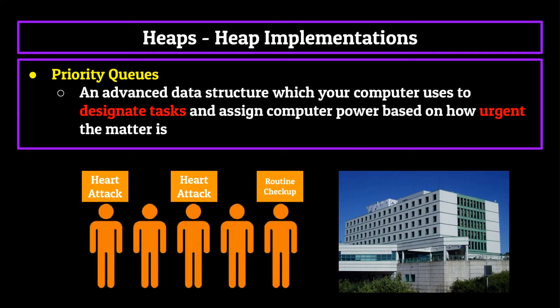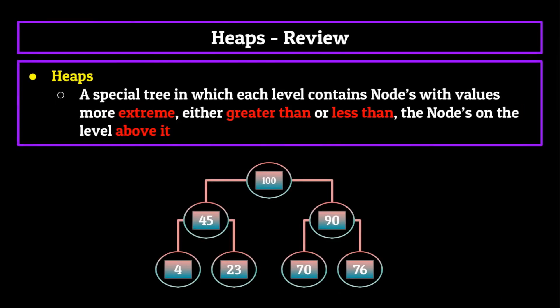And with that ends our discussion on heaps. To review, they are a special tree in which each level contains nodes with values more extreme, either greater than or less than the nodes on the level above it. Next week is our final episode, I'm sorry to say, and we'll be on graphs. So stay tuned for that. Thank you for watching.